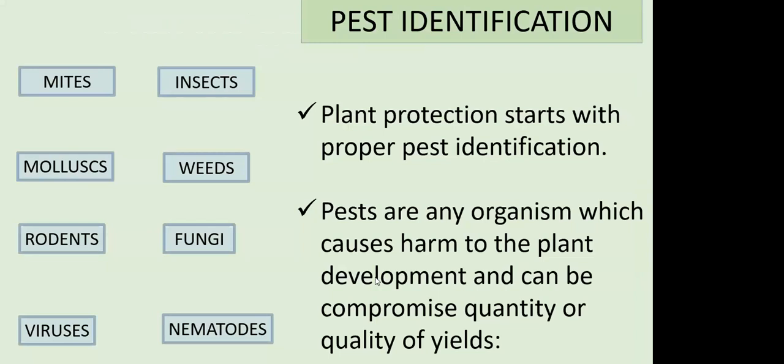The first step in plant protection is being able to identify the pests that are bothering you, because you cannot go to war with them without first understanding them and knowing how they behave. In definition, a pest is any organism which can cause harm to plant development and can compromise the quantity and quality of yields. These organisms can be mammals, invertebrates, and even plants.